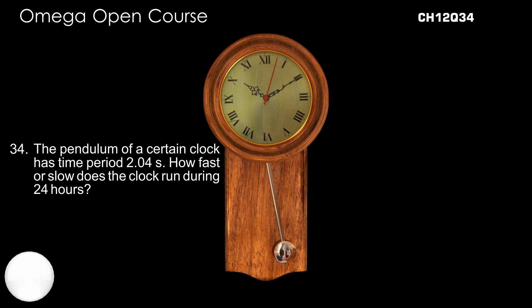The pendulum of a certain clock has time period of 2.04 seconds. How fast or slow does the clock run during 24 hours?